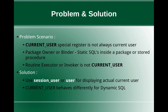This slide talks about the problem and the solution. The problem scenario is CURRENT_USER special register is not always displaying the current user value. When I say current user, it's more in a literal sense — the person who is executing SQL queries, packages, or stored procedures inside DB2. What happens in a specific scenario, like when static SQLs are coded inside a package or SQL stored procedure, is that the CURRENT_USER special register variable is not set to the routine executor or invoker. Instead, it is set to the package owner, binder, routine definer, or routine owner.